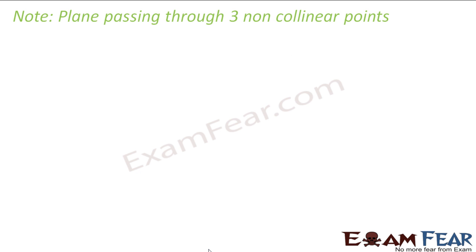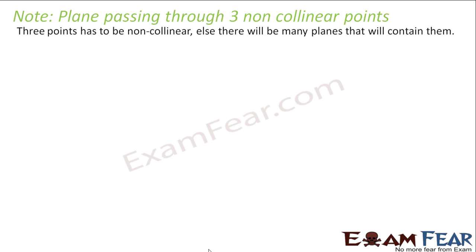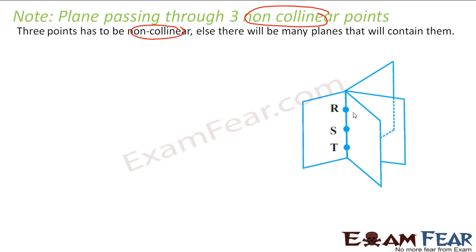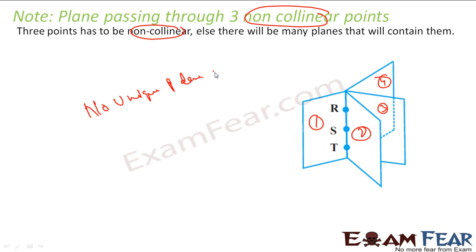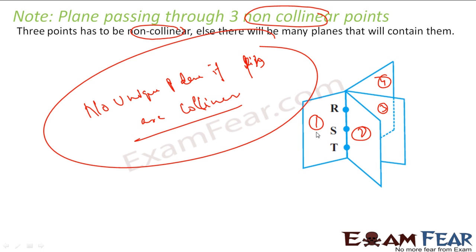There is a special note on a plane passing through three points: these three points must be non-collinear. If they are collinear, there can be infinitely many planes passing through them — plane 1, plane 2, plane 3, plane 4 — no unique plane if the points are collinear. Therefore, all three points must be non-collinear; only then can we form a unique plane from three points.